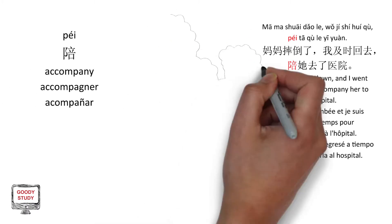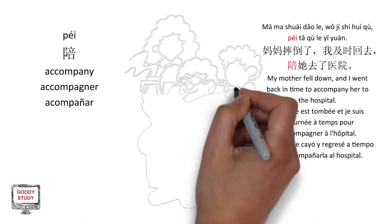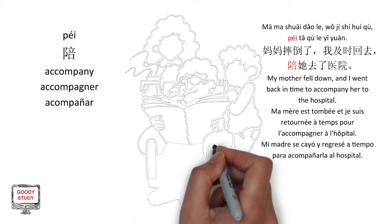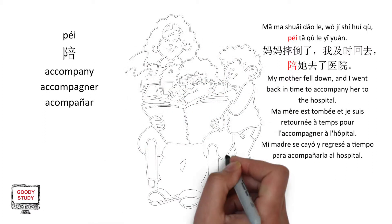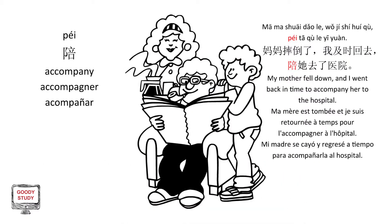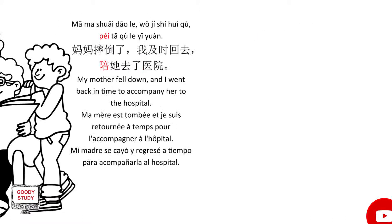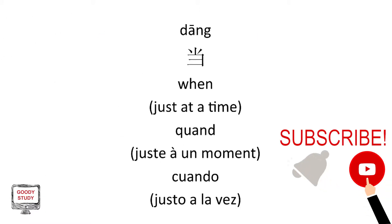陪。妈妈摔倒了，我及时回去陪她去了医院。(Accompany. Mom fell down, I went back in time to accompany her to the hospital.)